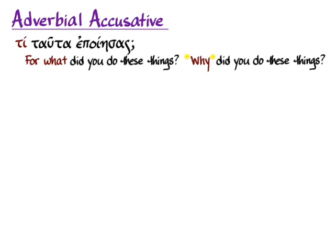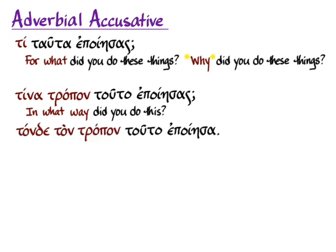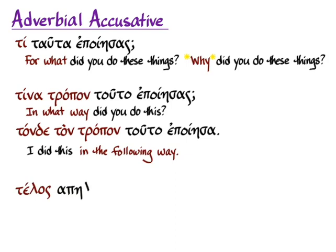We'll see the same kind of limiting effect with other words. 'In what way did you do this?' asks 'limited to what kind of thing did you do something.' Or: 'Ton de ton tropon tauta epoiesas' — 'I did this in the following way.' That's a good example of hode/heide/tode looking forward. You don't only do this with question words and interrogatives; you can see it with other words as well.